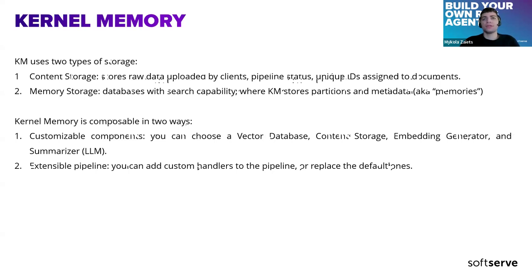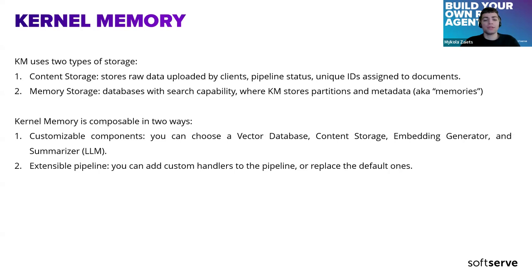Memory storage is a simple database with search capability where Kernel Memory stores portions and metadata — like vector embeddings. Kernel Memory is composable in two ways. First, customizable components: you can easily choose a vector database, content storage, embedding generator, and summarizer. Second, an extensible pipeline: you can easily modify the pipeline by adding your own custom handlers or replacing the default ones.